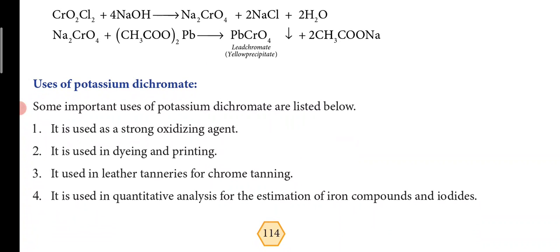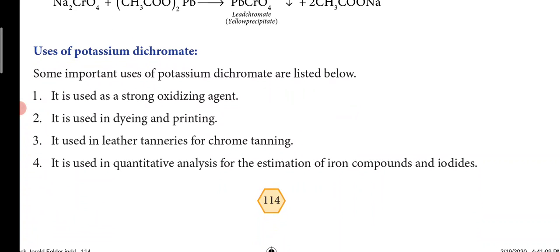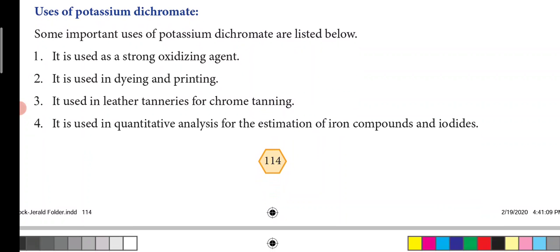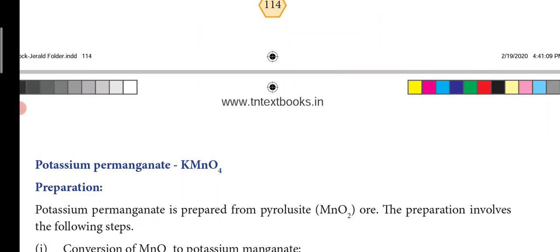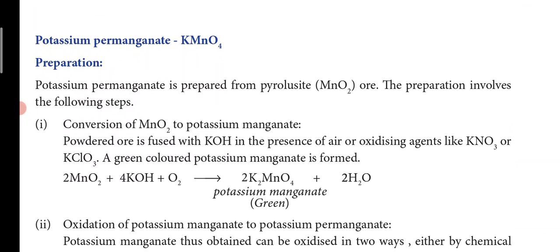The uses of potassium dichromate include: it is used as a strong oxidizing agent, used in dyeing and printing, used in leather tanneries and chrome tanning, and it is used in quantitative analysis for the estimation of iron compounds and iodides.